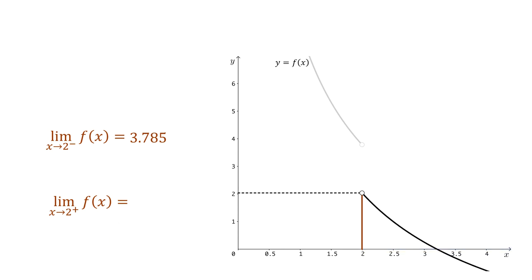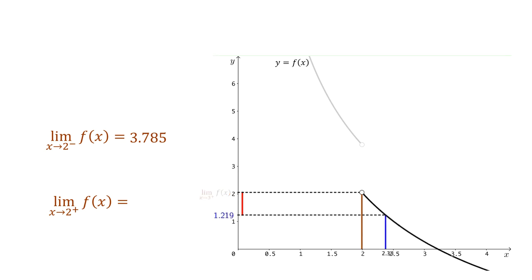We can approximate the height of the hole, and thus the value of this limit, using f evaluated at values of x that are greater than 2, such as x equals 2.5, which gives an underestimate of 1.002. Even though we do not precisely know the value of this limit, we can visually show the amount of error. We can get a better approximation by making x closer to 2. 2.012 is a better approximation to the value of the limit from the right, but how good is it?